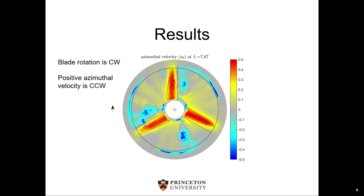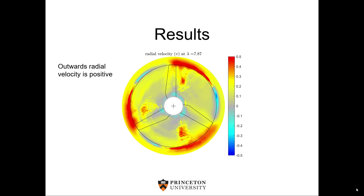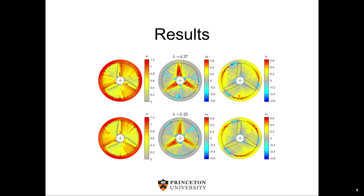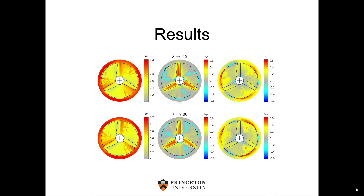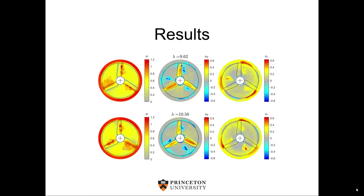Looking at the azimuthal velocity, with clockwise rotation of the blades, we have azimuthal velocity in the positive counterclockwise direction just behind the blades, once again consistent with the expected sense of the blade circulation. We also have regions of inwards and outwards radial velocity around the periphery of the swept disc. The full PowerPoint, which I will also upload, shows how this pattern varies slightly from case to case for different tip speed ratios.